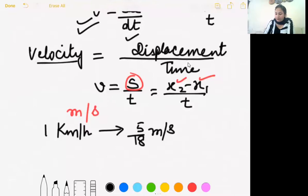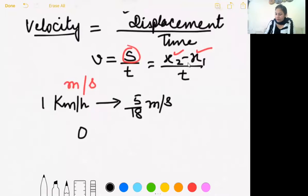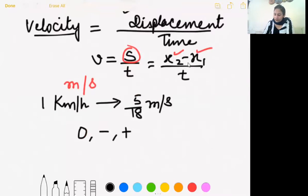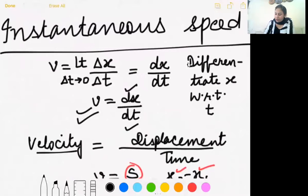Unlike speed, velocity can be zero, negative, or positive, because displacement can be negative. Also, regarding instantaneous speed: a speedometer is a device that gives us the instantaneous speed of an object.